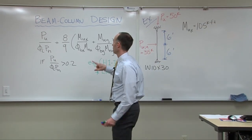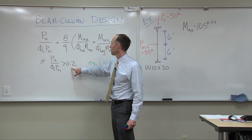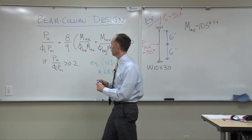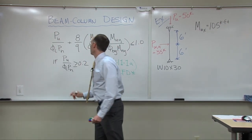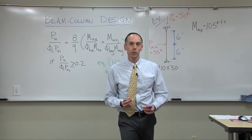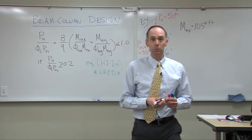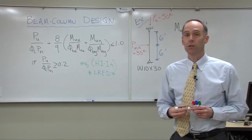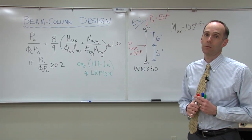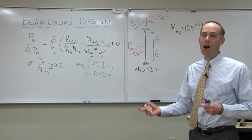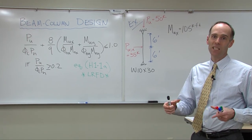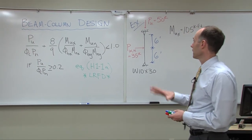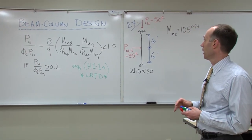Also be aware that this equation is only used if the ratio PU over φc·Pn is greater than or equal to 0.2. If it's not, then you have to use H1-1B. But for today, we're going to stick with this.